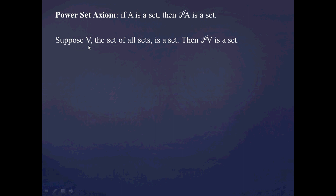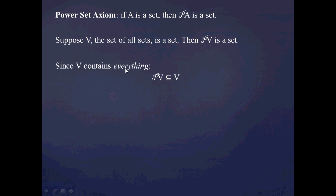So again, let V be the supposed universal set — the set of all sets. Then by the power set axiom, the power set of V must also be a set. V already contains all sets we could possibly speak of, so it's quite large, and the power set of V would have 2 to that number of members. Since V contains everything, the power set of V is merely picking out some of those things within V, so the power set of V must be a subset of V.